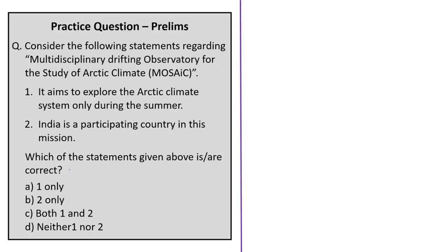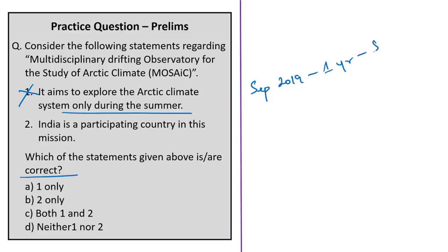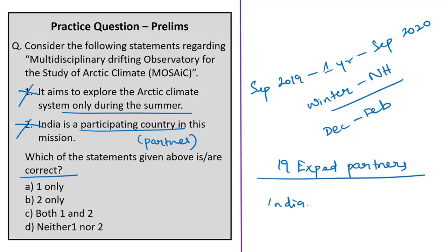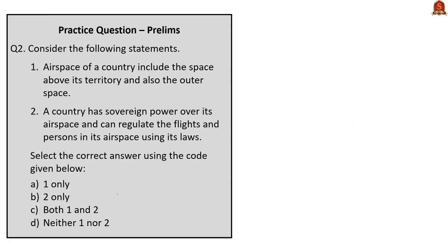The first question is with reference to the Multidisciplinary Drifting Observatory for the Study of Arctic Climate (MOSAIC). Two statements are given. Statement one says it aims to explore the Arctic climate system only during summer — this is incorrect, as the MOSAIC expedition started from September 2019 and runs for one year till September 2020, covering winter months too. Statement two says India is a participating country — this is wrong; there are 19 partner countries and India is not among them, though China is. Therefore, the correct answer is option D: neither one nor two.